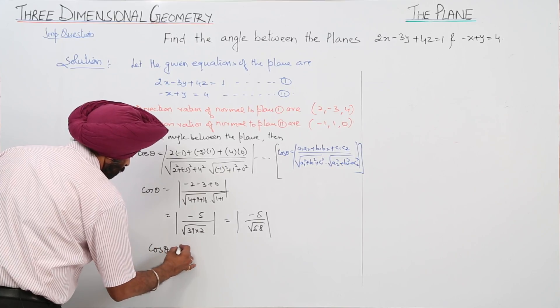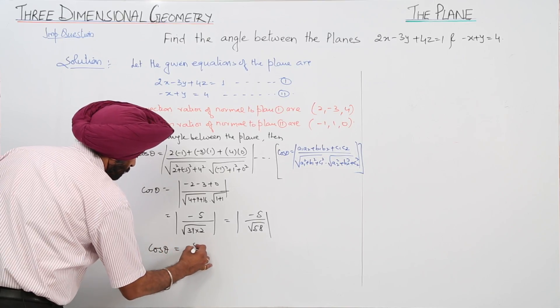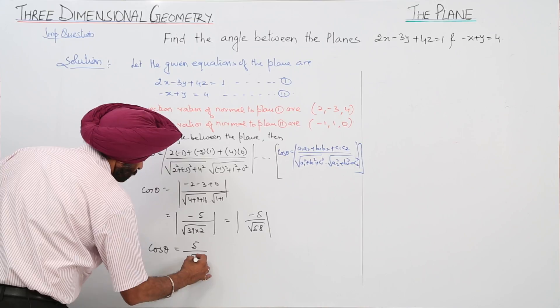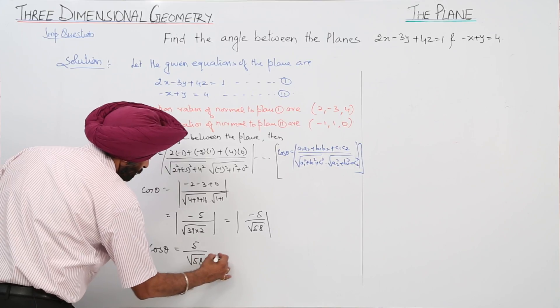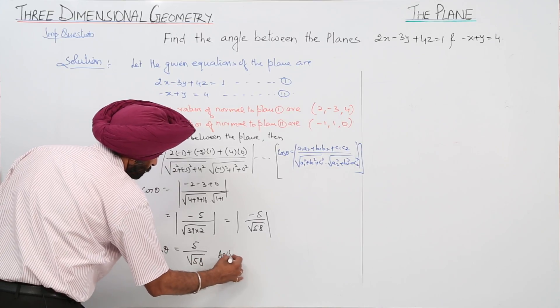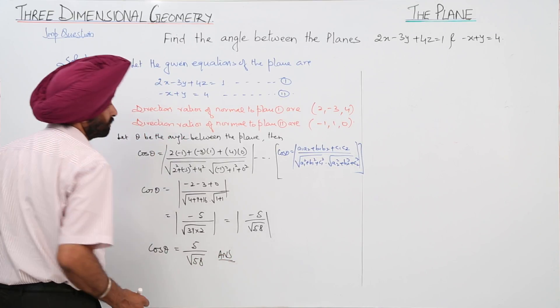So cos theta equals minus 5 upon square root of 58. This is the answer.